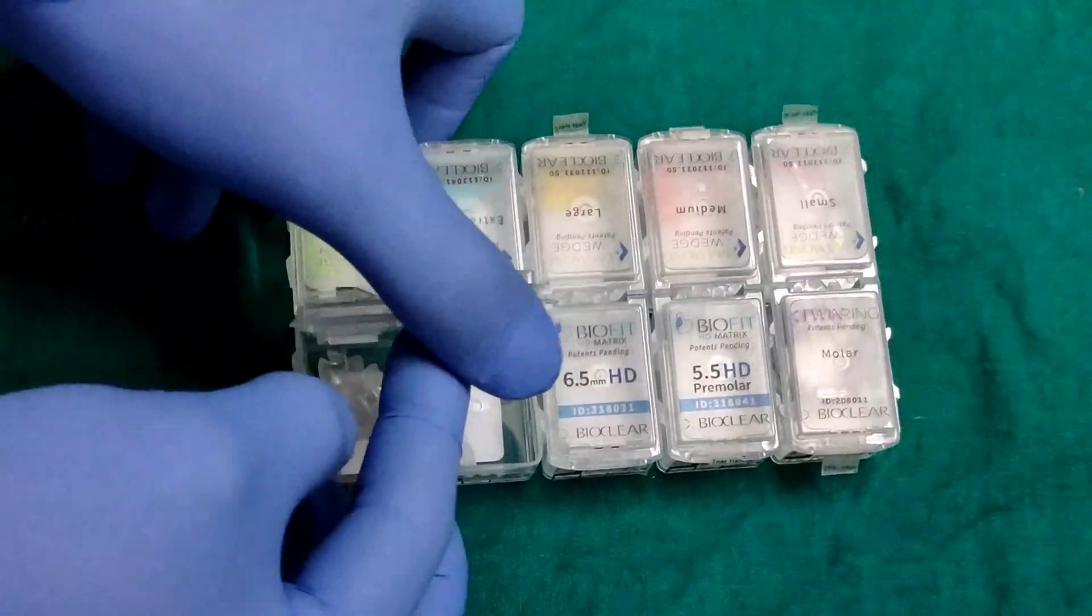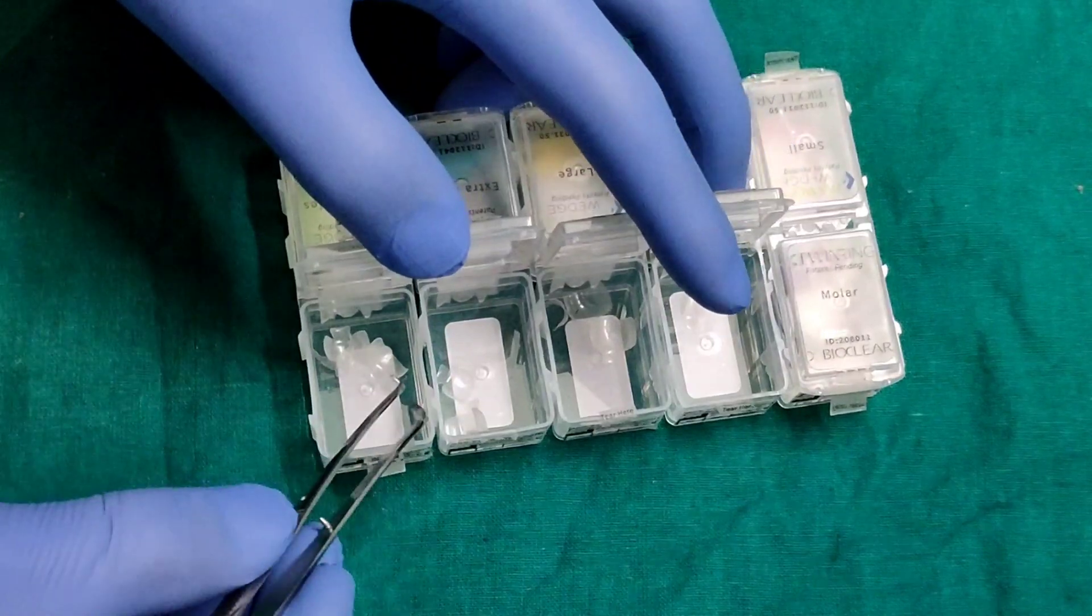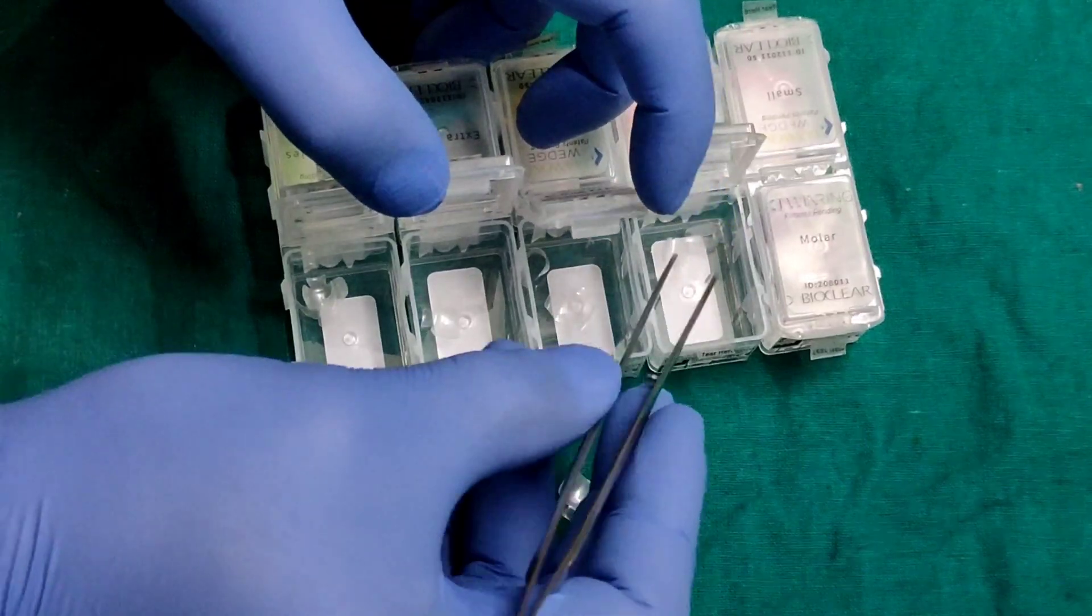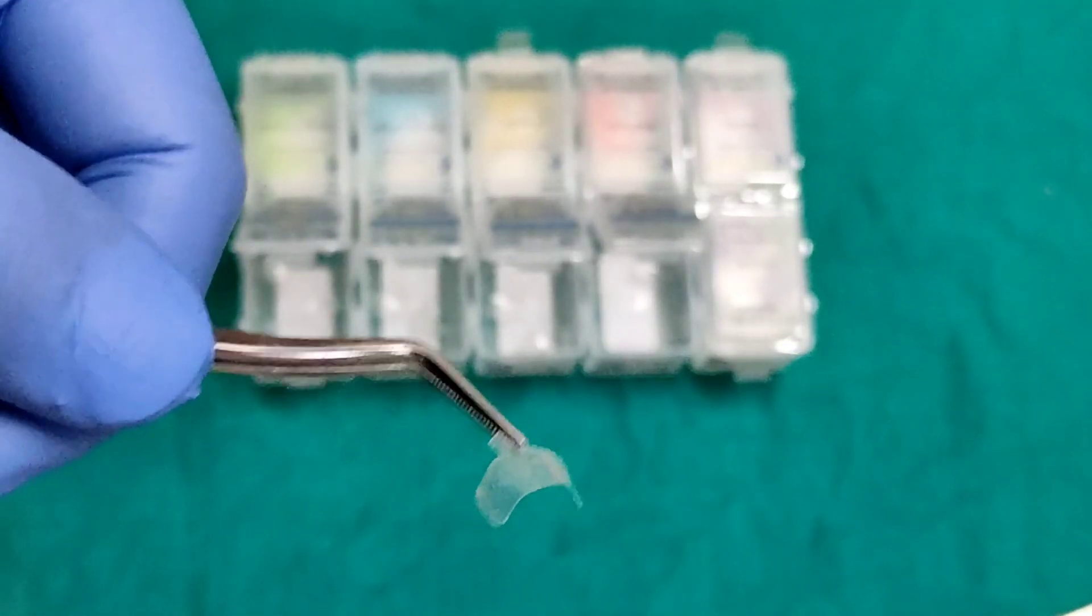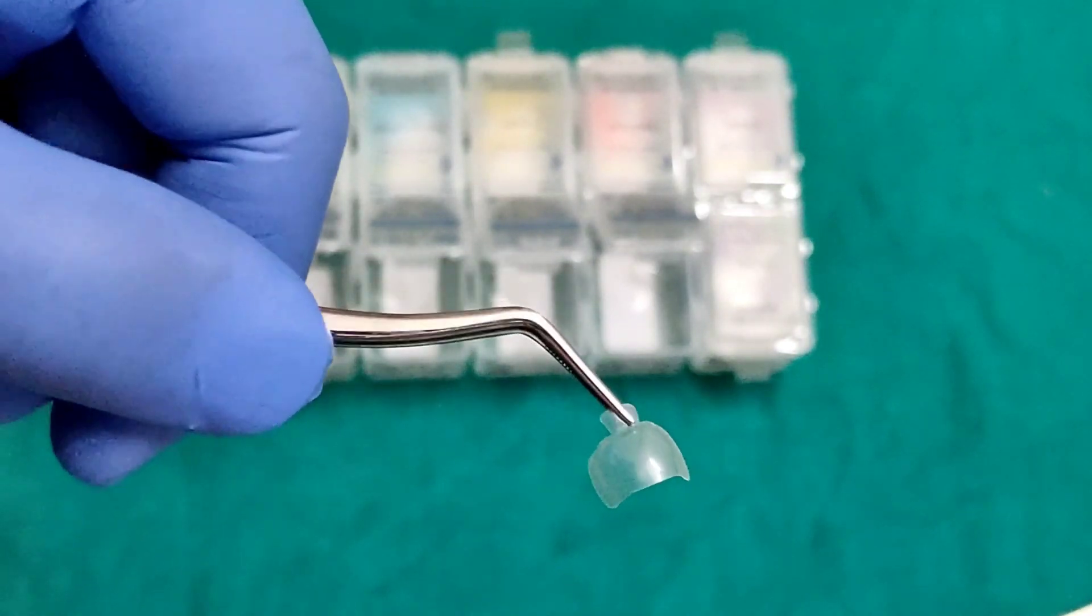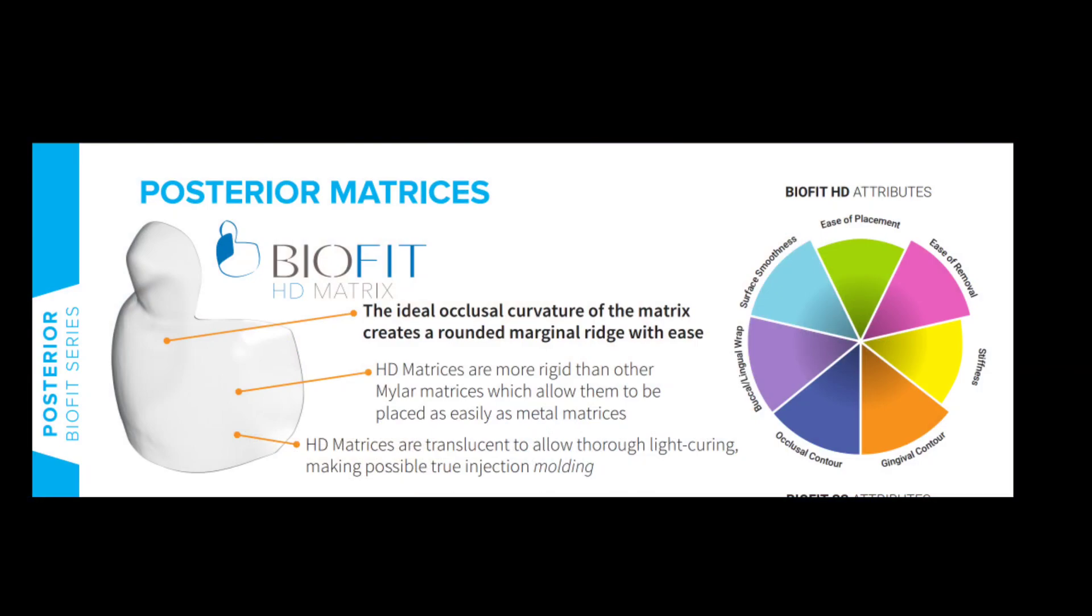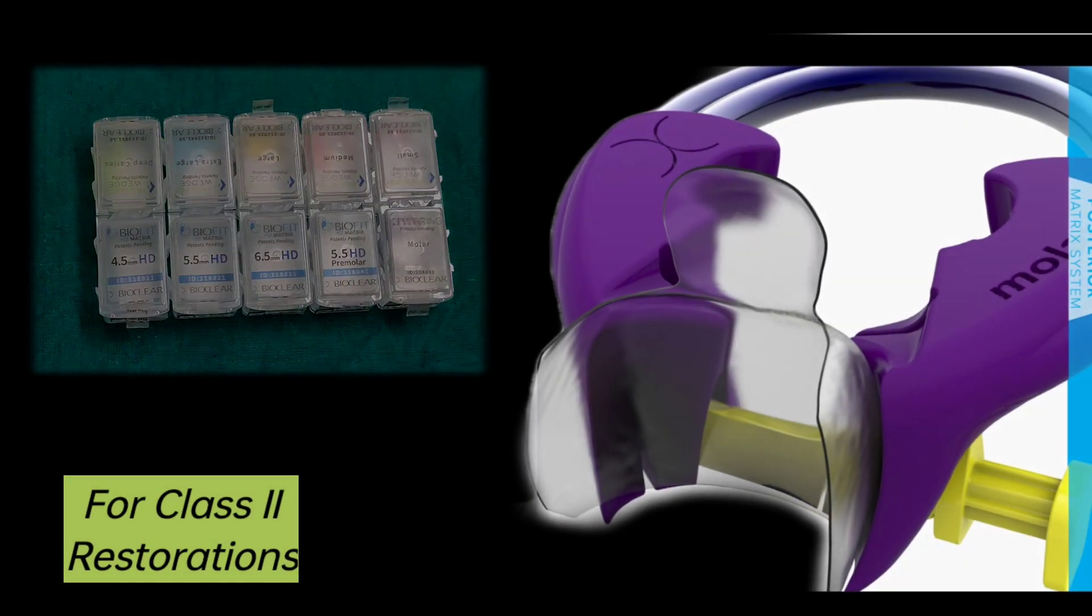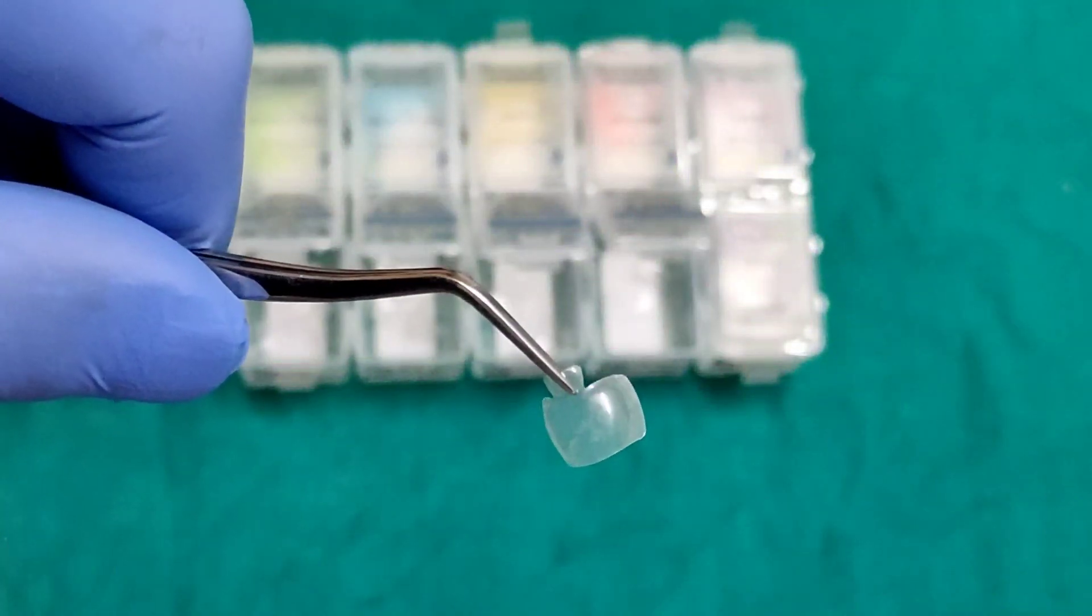BioFit HD Matrix comes in various sizes: 4.5mm, 5.5mm, 6.5mm for molars, and 5.5mm for premolars. The manufacturer claims that the ideal occlusal curvature of the matrix creates a rounded marginal reach with ease. HD matrices are more rigid than other minor matrices, which allow them to be placed as easily as metal matrices. The HD matrices are translucent to allow thorough light curing.